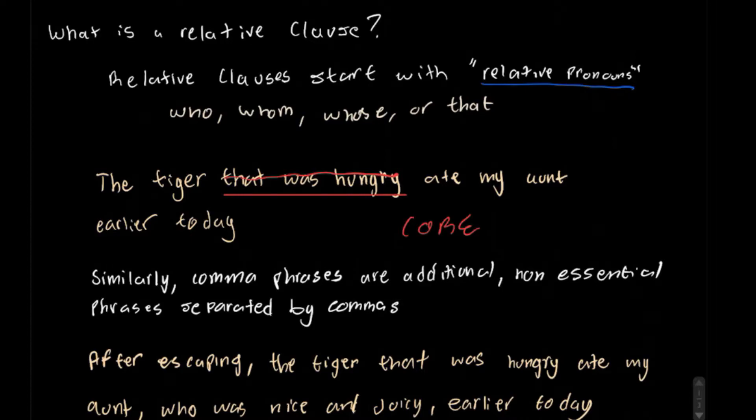So, here we have a similar example. However, this time, we added some comma phrases. Now, comma phrases are similar in that there are additional, non-essential phrases separated by commas. So, here's an example. After escaping, the tiger that was hungry ate my aunt, who was nice and juicy, earlier today.